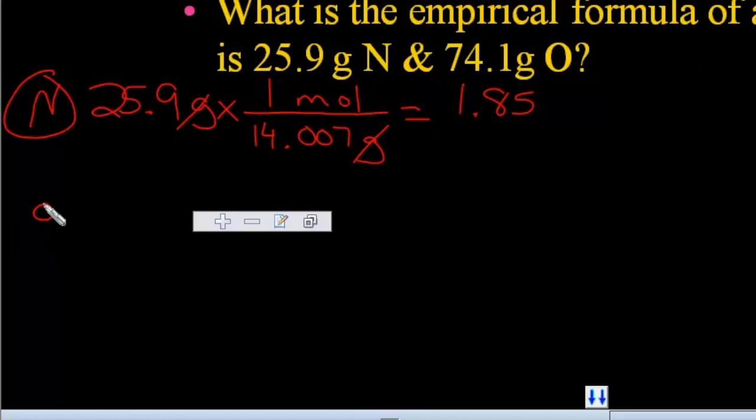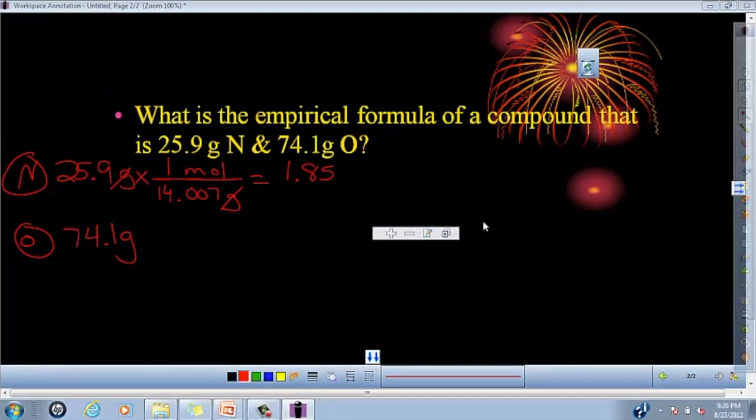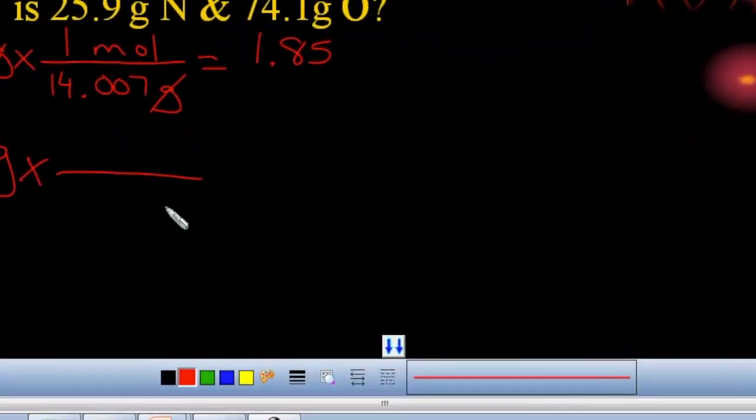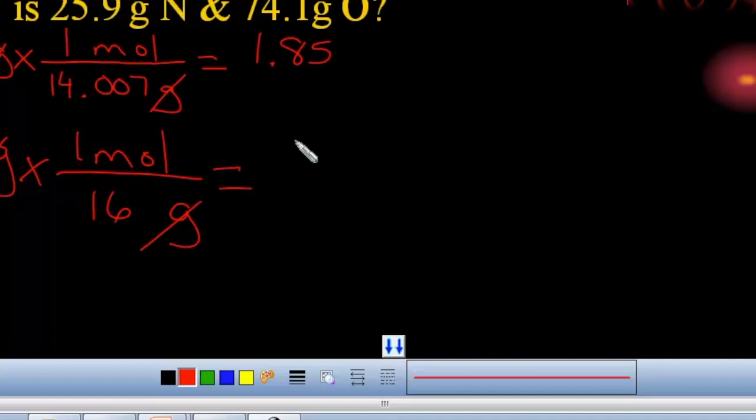Now you've got to go do the same thing for oxygen. Oxygen is 74.1 grams. Let's see if I can drag this little thing over. And again, we're going to take it to moles. So we have grams on the bottom, and that would be the molar mass of oxygen, one mole on top. Grams cancel. And here we get 4.63.